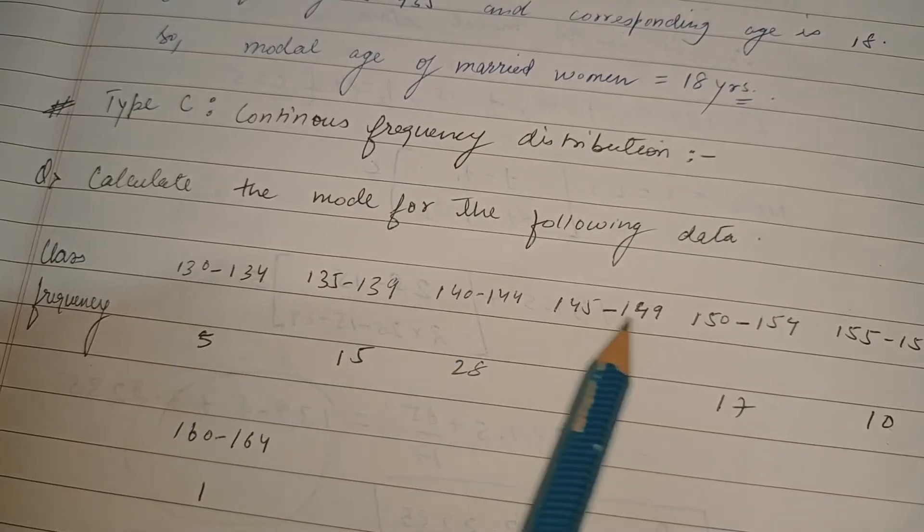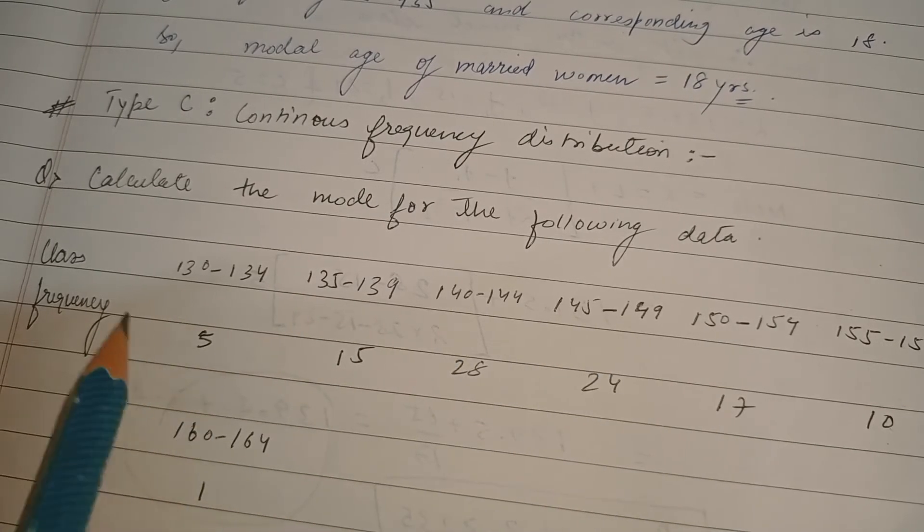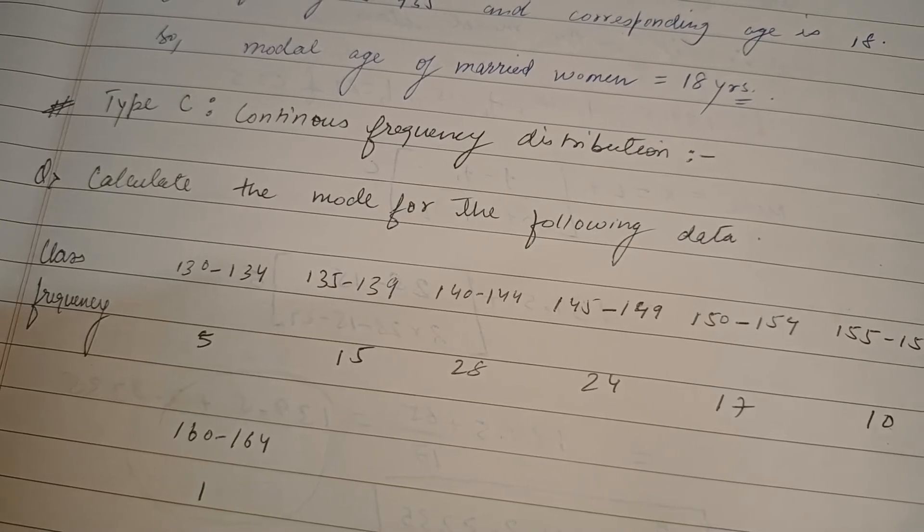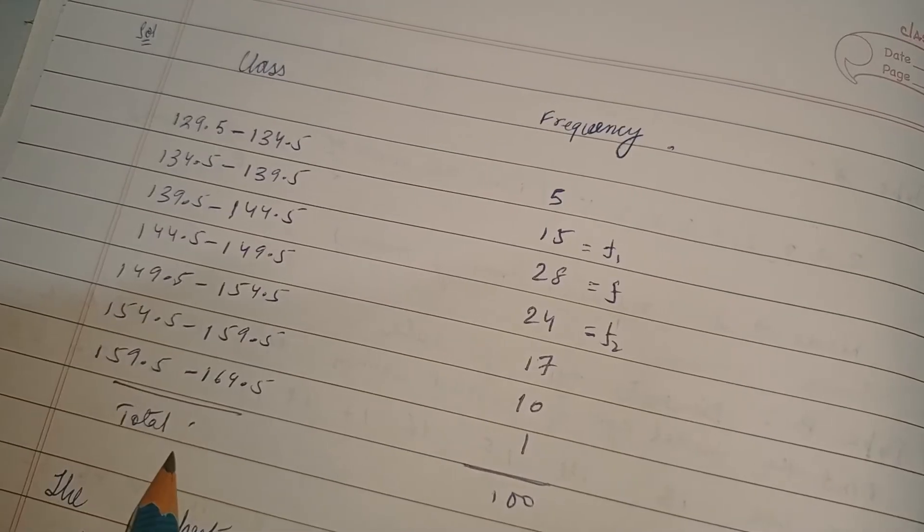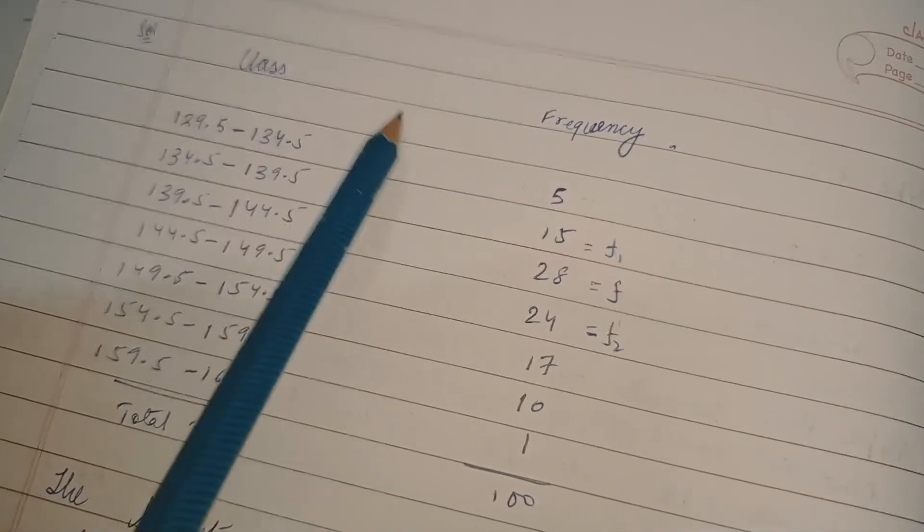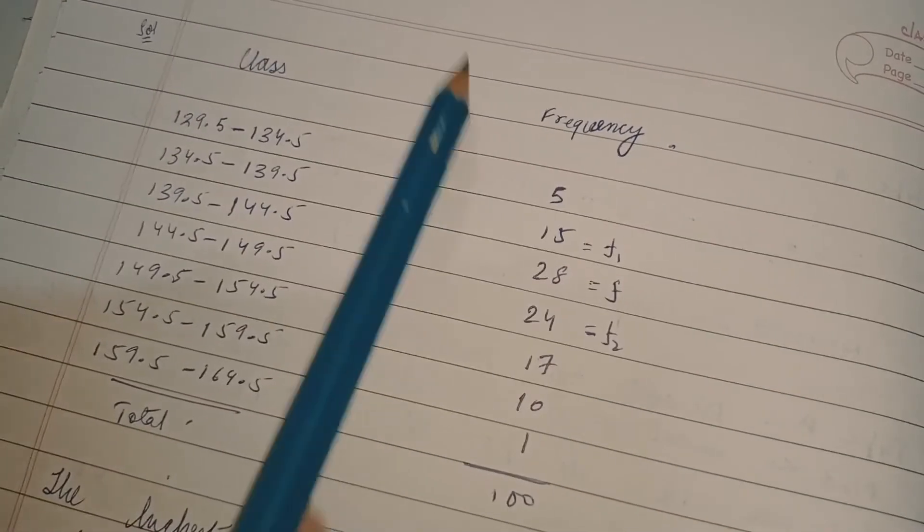We'll do that in all the classes. We have already done that in the previous problem solving classes. Now make two columns: class and frequency. I have not made table here but you should make table lines.